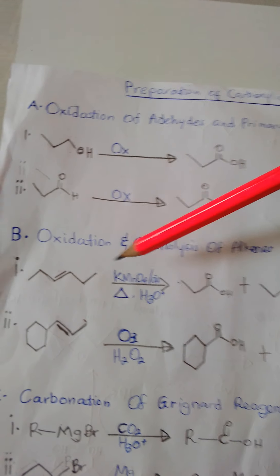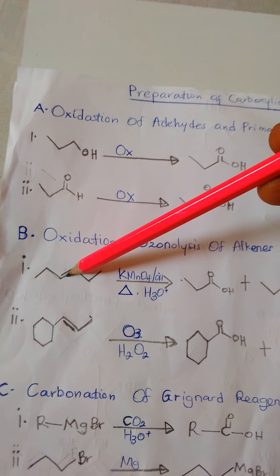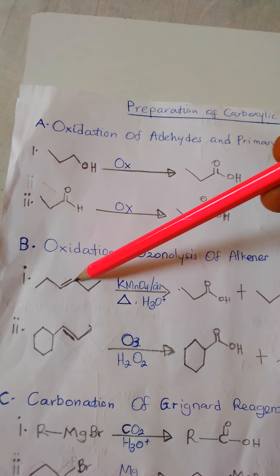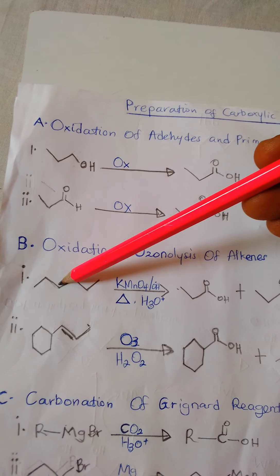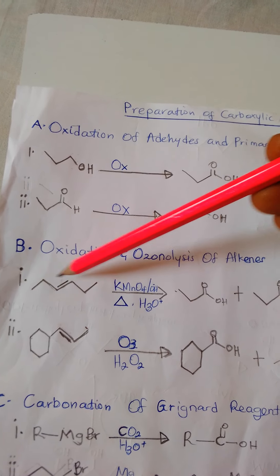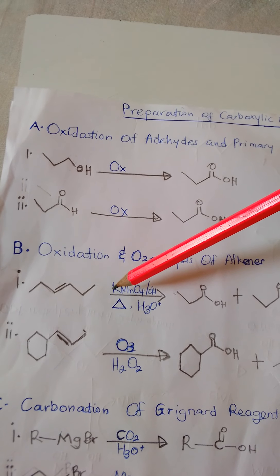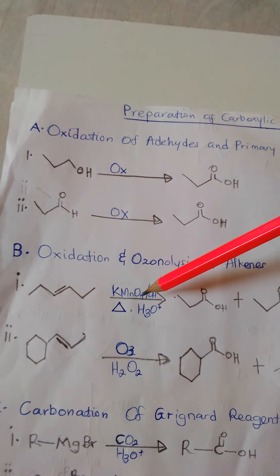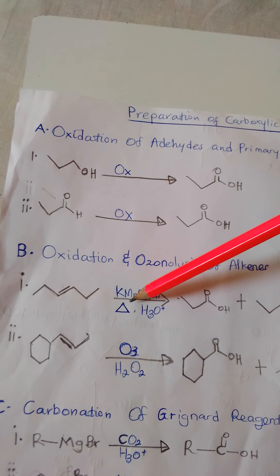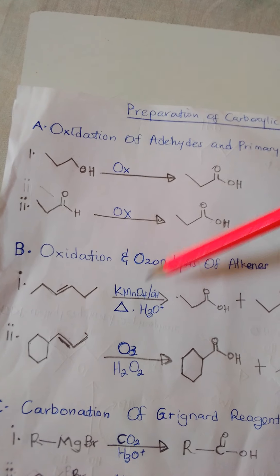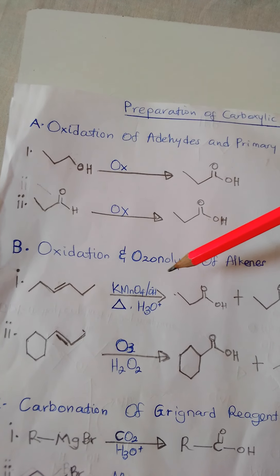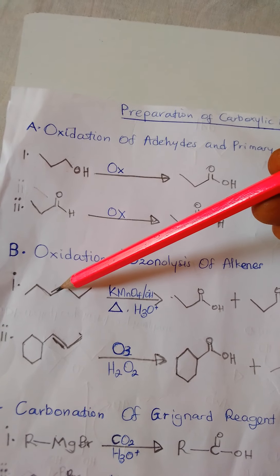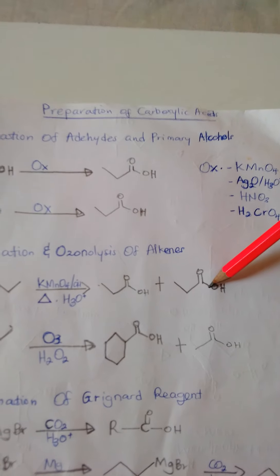When this alkene cleaves, one side has three carbons and the other side has three carbons — so each side will be converted to a carboxylic acid. This is oxidative cleavage using hot potassium permanganate. Note that the condition must be hot; if you use cold potassium permanganate, you get different products. Hot potassium permanganate cleaves the alkene and converts it to two carboxylic acid groups.